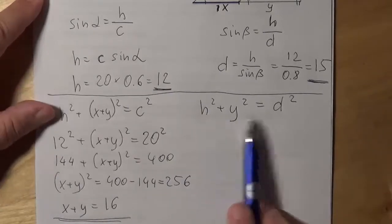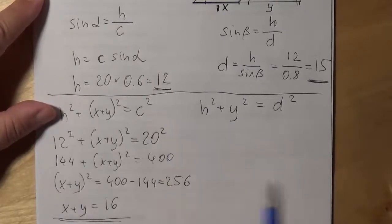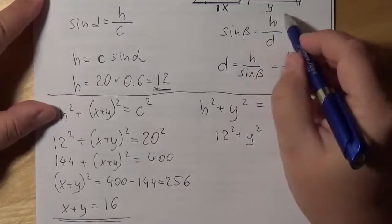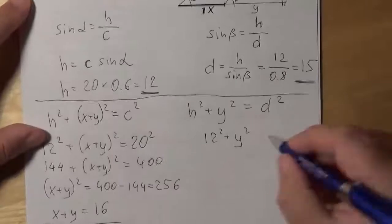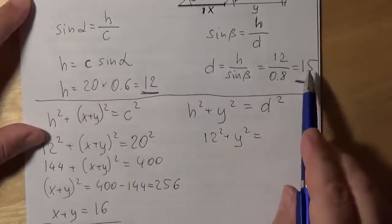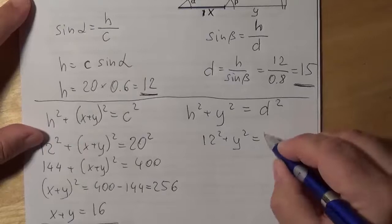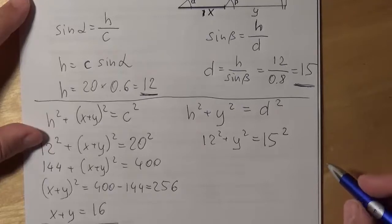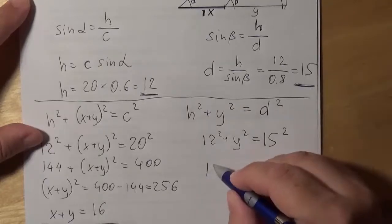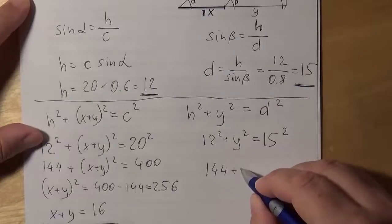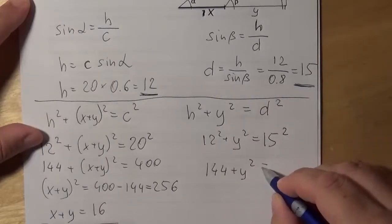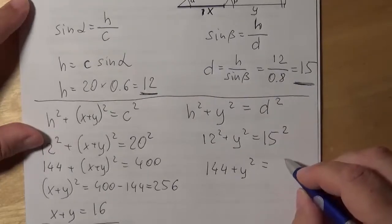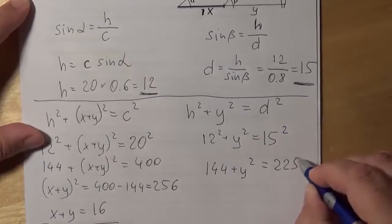Now, let's solve the other equation that we received. H is 12, so 12 squared, plus Y squared, we still don't know, don't know Y, equals D squared. D was also already calculated as 15, so it's 15 squared. 12 squared is 144 plus Y squared equals 15 squared, it is 225.